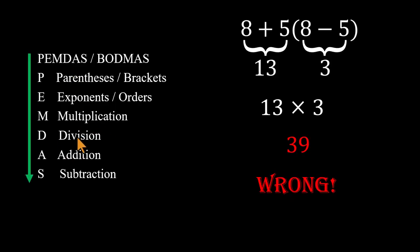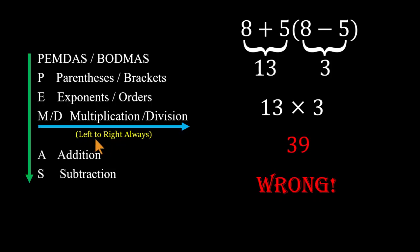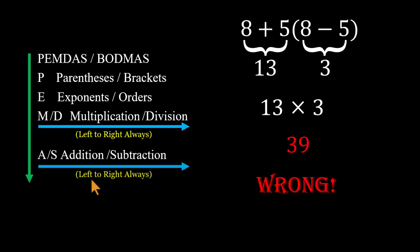Multiplication and division share equal priority, and when both appear side by side, we go left to right. The same holds for addition and subtraction. It tells us the order of operations, the order in which math actually wants to be done.